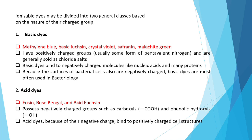In ionizable dyes, two general classes are divided based on the nature of the charged group. The first one is basic dyes — examples include methylene blue, basic fuchsin, crystal violet, safranin, and malachite green. Basic dyes have positively charged groups and are generally sold as chloride salts. They bind to negatively charged molecules like nucleic acids and many proteins. Because the surface of bacterial cells is also negatively charged, basic dyes are most often used in bacteriology.